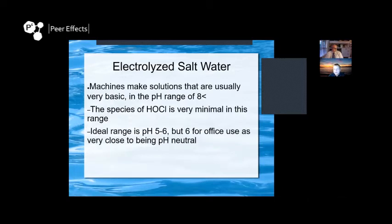When you first make the solution with the machine it has a pH of around 8 or more, and the reactive HOCl species is very minimal in this range. The ideal range is pH 5–6, but for office use I recommend pH 6 because it's very close to neutral pH 7.